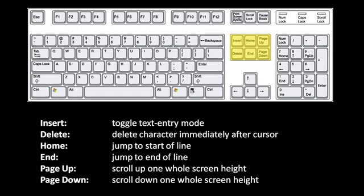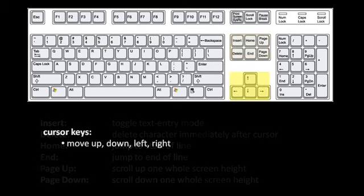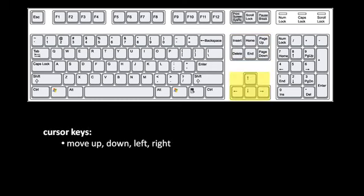The Insert key usually doesn't do anything — it's another archaic holdover. What it used to do was toggle between two text editing modes: one where you type and letters are inserted at your cursor, and another where the letters you type overwrite whatever is immediately after the cursor. Eventually, program designers realized that no one actually wants to edit text that way, so there's always just the one mode now. The cursor keys — the up, down, left, and right arrows — very self-evidently simply move up, down, left, and right.